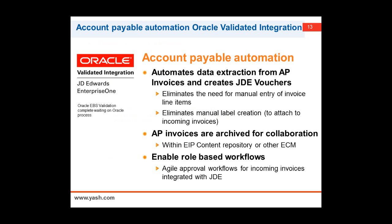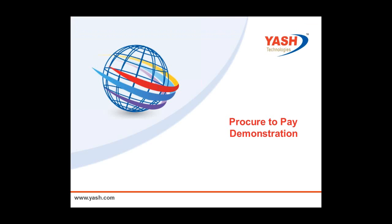EIP has an Oracle-validated integration for JD Edwards Enterprise One, for Oracle EBS, and for Salesforce customers. It helps customers automate their data extraction from AP invoices and creates JD Edwards vouchers, eliminating the need for any manual entry of invoicing line items. It also eliminates manual label creation, offers a content repository for archival, and the workflow for JD Edwards invoicing happens through that. With these benefits and an overview of EIP, I'll hand it over to Haider, who's going to talk more around the technical architecture and show a demonstration of the product.